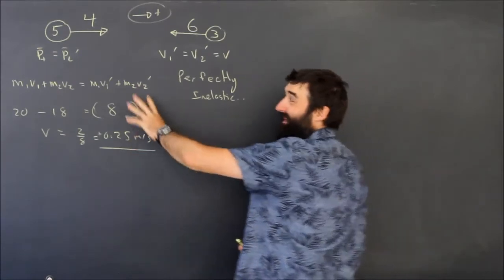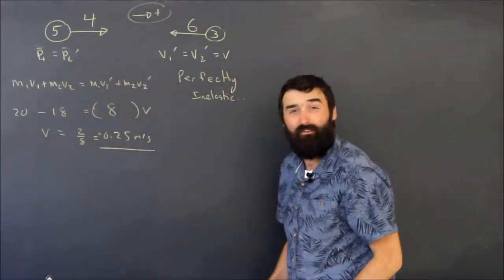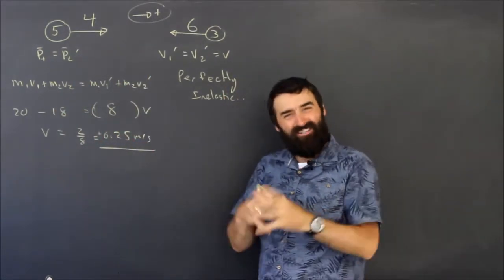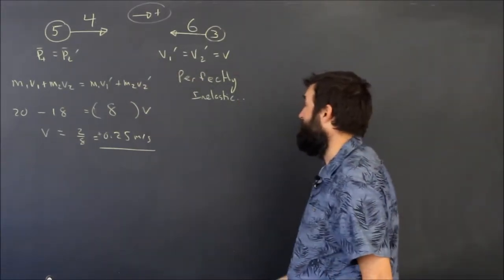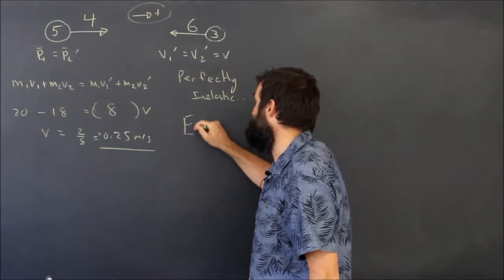They didn't stop because if they had stopped, it would have broken the law of conservation of momentum. It's impossible for them, in this case, to stick together and stop, which means they still had some kinetic energy. So how much kinetic energy did they have?